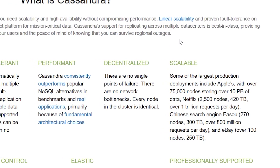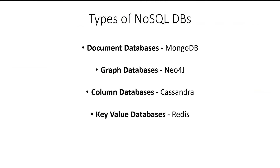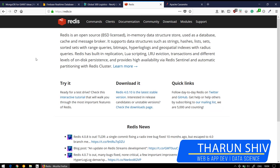The fourth type we have is key-value databases. Don't confuse them with document databases — document databases are based on documents with key-value pairs, but key-value stores are the simplest NoSQL databases. Every single item in the database is stored as an attribute name or key together with its value. An example of key-value stores is Redis, which allows each value to have a type such as integer, adding extra functionality. You could check out their official website — links are in the description below.